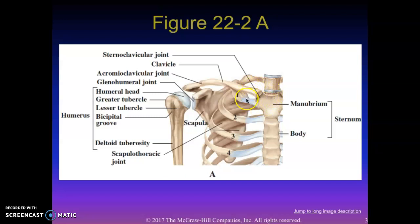The interesting fact about the sternoclavicular joint is it is the only true joint that attaches the shoulder and the rest of the arm — upper arm, elbow, wrist, hand, forearm — to the body. All of that is only connected to the body via this sternoclavicular joint. It's the only true joint holding it in place.